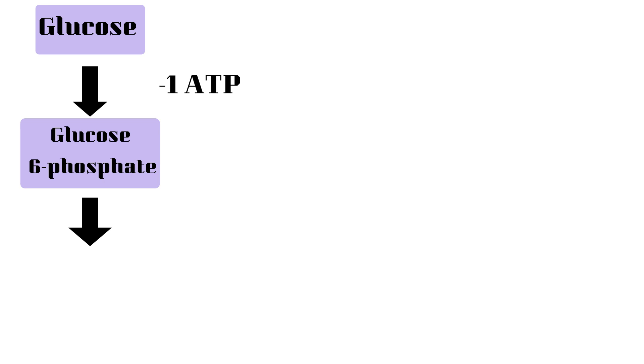Once this happens, there is going to be another reaction where glucose 6-phosphate turns into fructose 6-phosphate. This reaction occurs with the help of the enzyme isomerase.